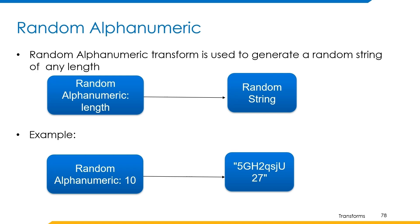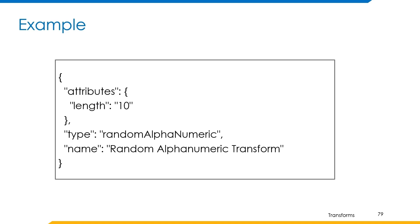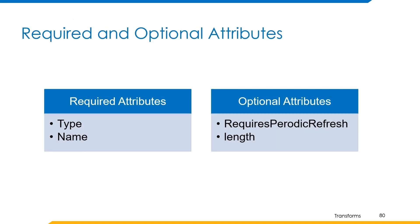Now let's understand how to build a transform using this operation. The example can be built in this format where the name is random alphanumeric transform, type is random alphanumeric, and the length is 10 — so we will receive a random string of length 10 as output. The required attributes are type and name. The optional attributes are requires periodic refresh and length.